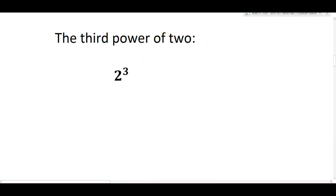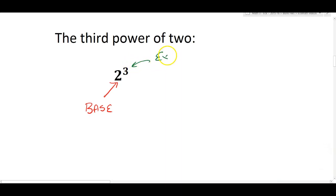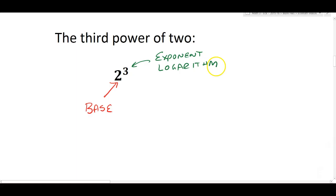You might not think there are any logarithms involved in this third power of two that you see right here, but there are, because this third power of two is really broken into two pieces. The two is called the base — that's familiar to you. The three, though, we usually call the exponent. But another term for it, another way to think about it, is as the logarithm. So in this case, it's just synonymous with the exponent in this expression.